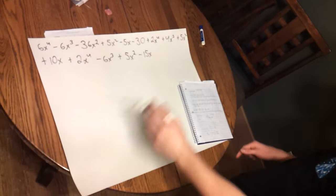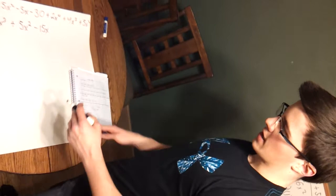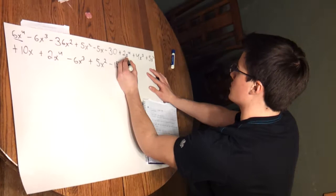The next step is to combine all like terms together. First I'm going to start with any term that has x with the exponent of 4 on it.